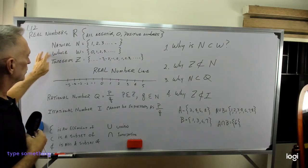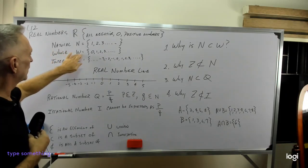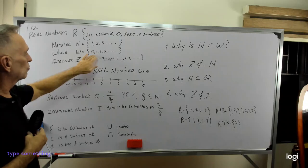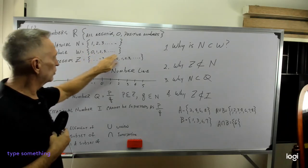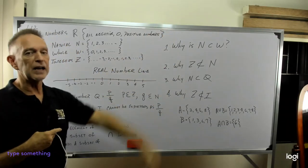Now whole numbers, you'll see denoted here by W, is the group of numbers that do include zero, 1, 2, 3, 4, all the way as high as you can imagine.